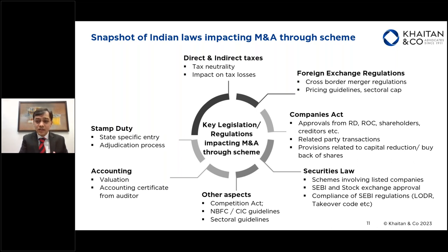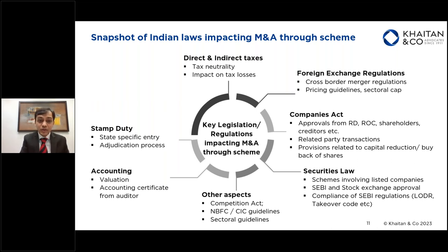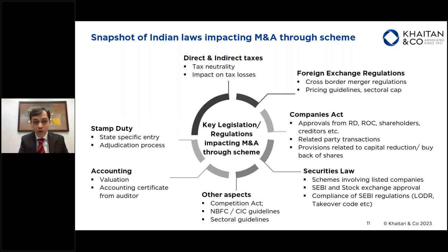One also needs to consider the accounting implications of the transaction — how the transaction would be recorded in the books of the company — as well as the stamp duty implications, which depend on the registered office of the companies and whether those companies have immovable properties. One also needs to look at the overall cost involved in doing a scheme and obviously the tax implications. While mergers and demergers are generally tax exempt, certain types of transactions may have tax implications — for example, capital reduction, if you cancel shares held by one set of shareholders.